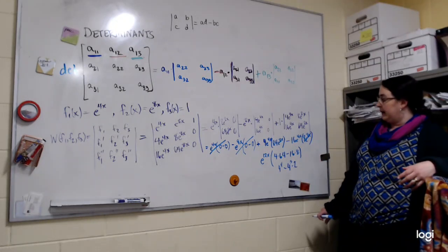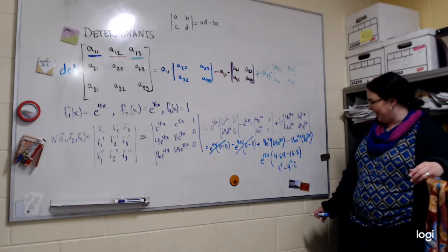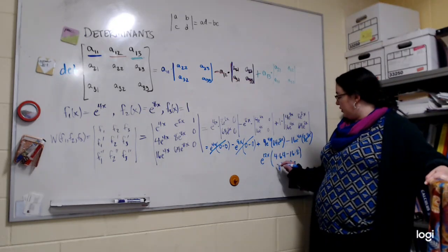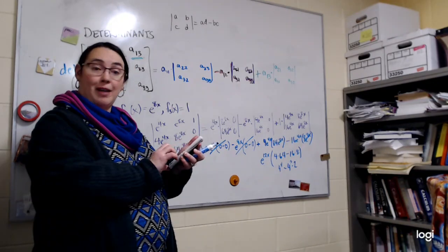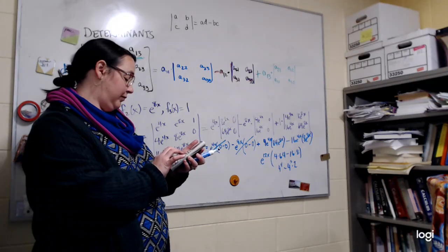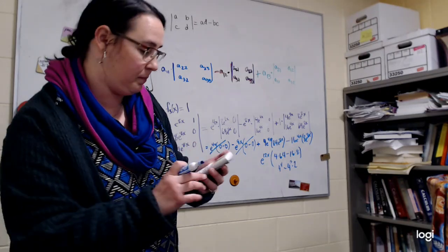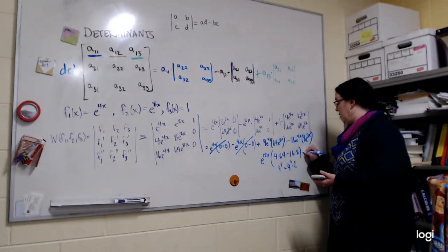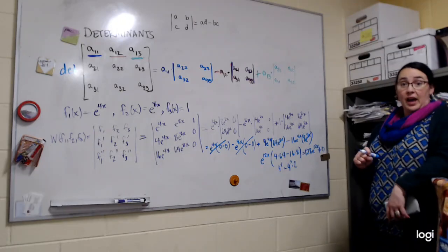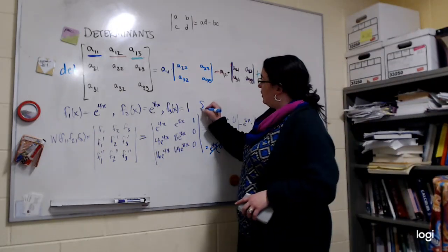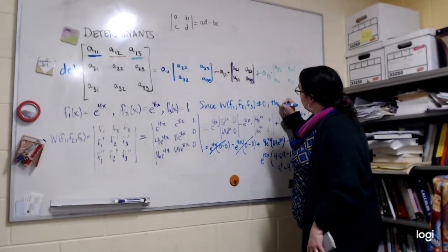So this won't be 0. Let me give you the exact arithmetic, which my head won't let me do right now. Sorry about that. So we get 128e to the 12x. Because this is not uniquely the 0 function, I can determine that these three functions are linearly independent. So since the Wronskian is non-zero, these three functions are linearly independent.